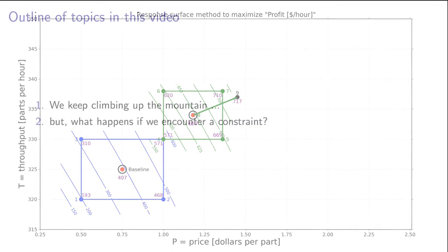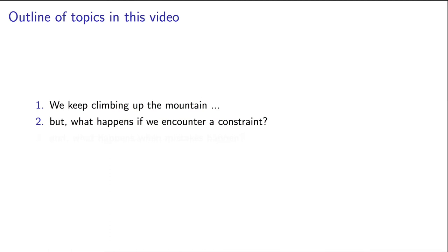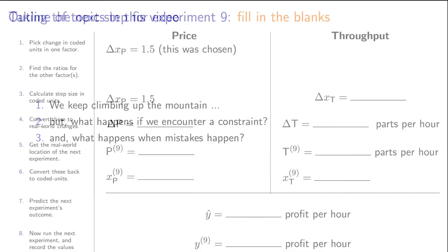We will look at what happens if you have constraints in your experiment. By that I mean, what happens if you want to take a step and realize, because of safety issues or other reasons, that you can't quite go as far as you had hoped. We will also look at mistakes. What if you or your colleagues run an experiment but use the wrong settings? We will show that you can easily recover from that.